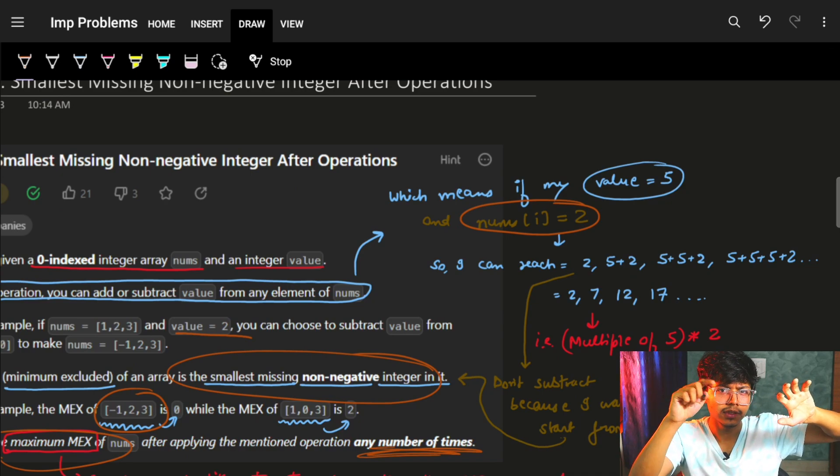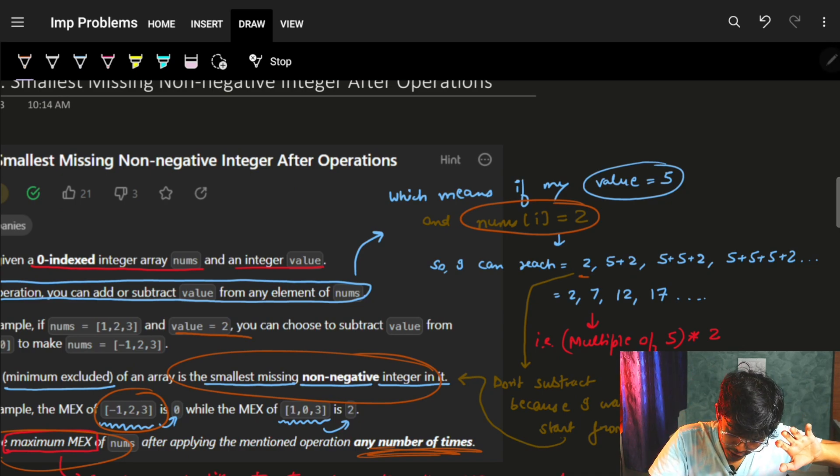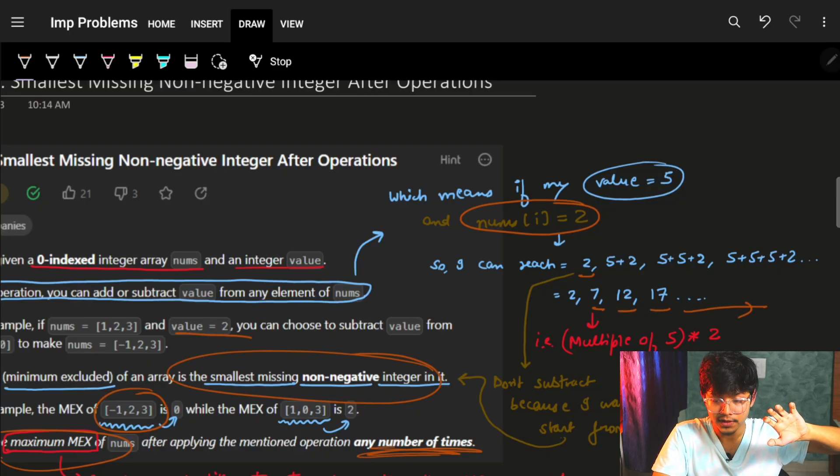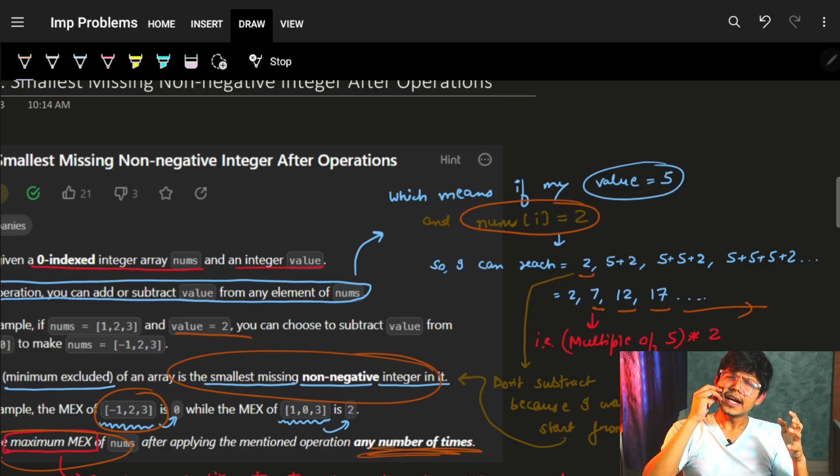So I can easily achieve a 2, a 7, a 12, a 17 and so on. So I can achieve every number. So it is much more convenient for me to actually, if I have these numbers, let's say if I have a 7, I'll just convert back it to 2.